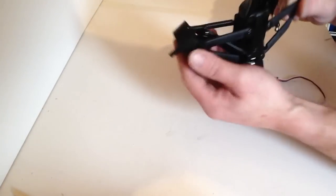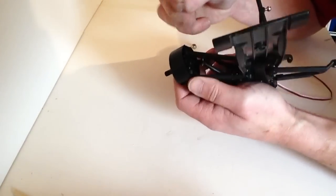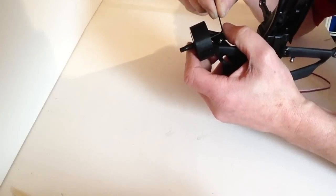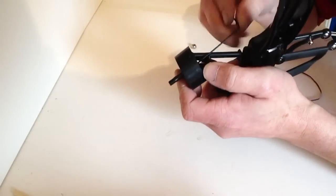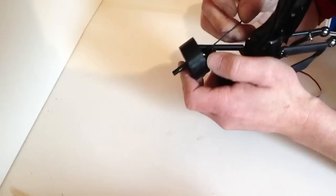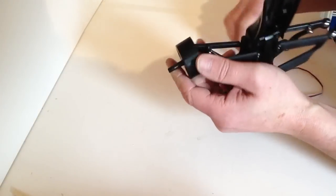Once the C-clip's on, take your allen key and then just tighten up the grub screw that we put on earlier so that it bites onto that shaft like so.